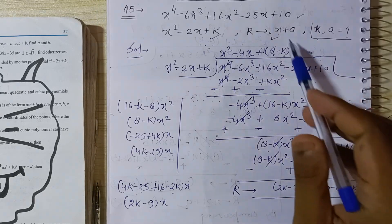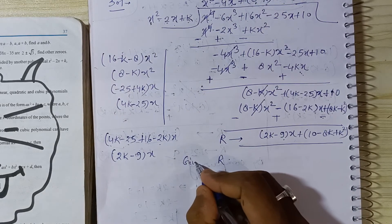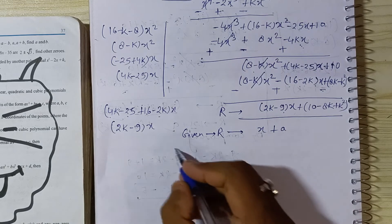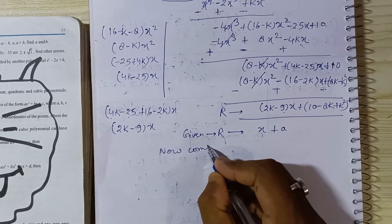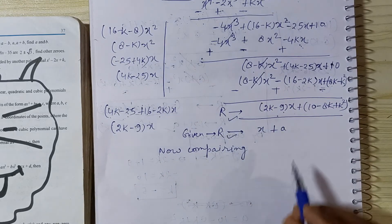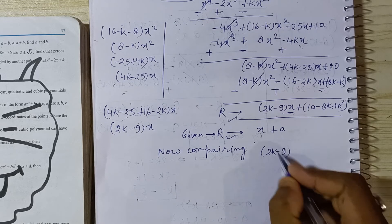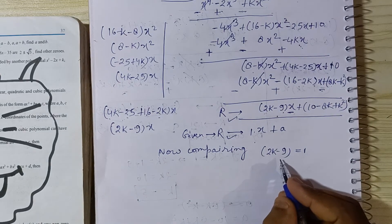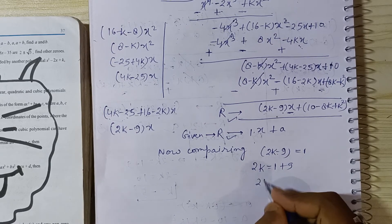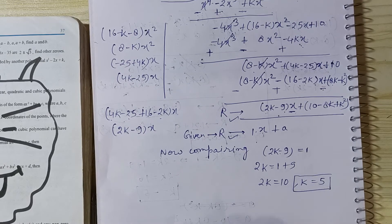Now, the question says the remainder value equals x plus a. So we compare our obtained remainder with x plus a. Comparing both remainders, the coefficient of x in our remainder is 2k minus 9, and the coefficient of x in x plus a is 1. So 2k minus 9 equals 1, which gives 2k equals 10, and therefore k equals 10 divided by 2, which is 5. So the value of k is 5.